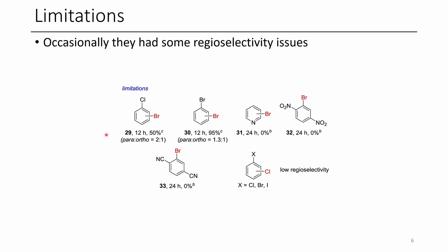Some limitations were that if they had a monochlorobenzene, they didn't get good regioselectivity for the bromination. The same applied for bromobenzene. In the case of pyridine, 1,4-dinitrobenzene, and 1,4-dicyanobenzene, they didn't obtain any brominated products, likely due to it being too electron-deficient. It's also worth noting that if they tried chlorination on any of the monohalobenzenes such as chlorobenzene, bromobenzene, or iodobenzene, low regioselectivity was observed.